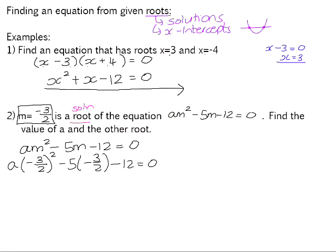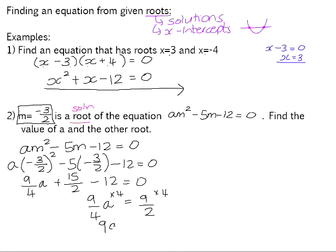Negative 3 over 2 squared is 9 over 4, so that gives us 9 over 4a plus 15 over 2 minus 12 equals 0. If we add 15 over 2 minus 12 and move it across to the other side, we get 9 over 2 — you can check that on your calculator. So we get 9 over 4a equals 9 over 2. Multiplying both sides by 4 gives us 9a equals 18, and therefore a equals 2.